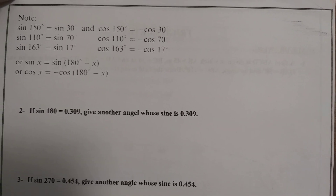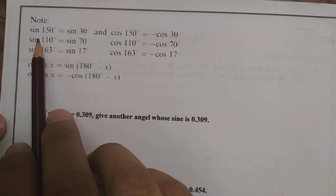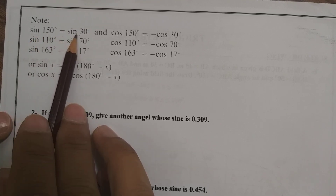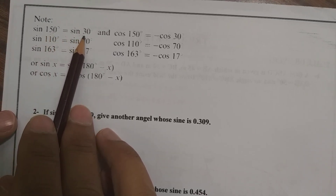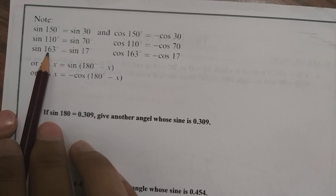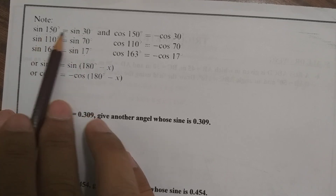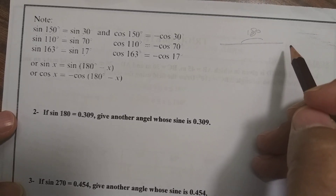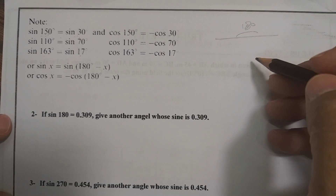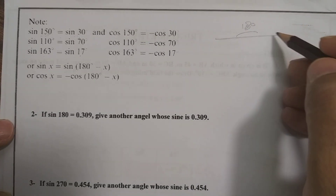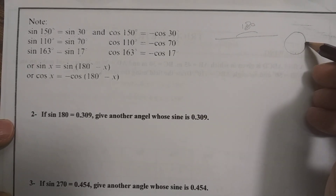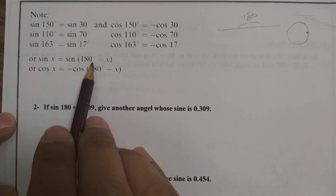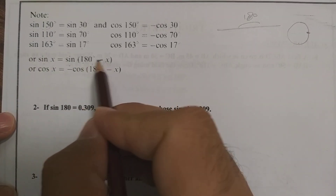Now we should remember the symmetry properties. Sin 150° = sin 30°, meaning they have the same answer. Similarly, sin 110° = sin 70°, and sin 163° = sin 17°. The total angles on a straight line is 180°. The formula is: sin x = sin(180° - x), so whatever angle is given, 180° minus that angle gives the same sine value.